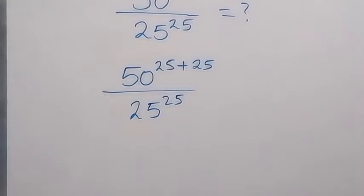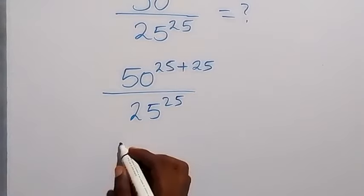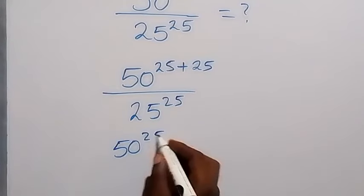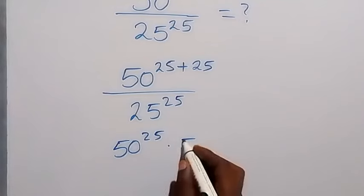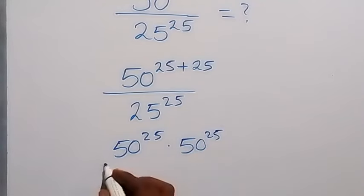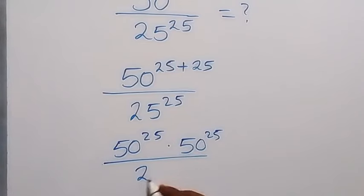Then, in the next step, we can separate this from the law of indices and this will be 50 raised to power 25 times 50 raised to power 25, then divided by 25 raised to power 25.